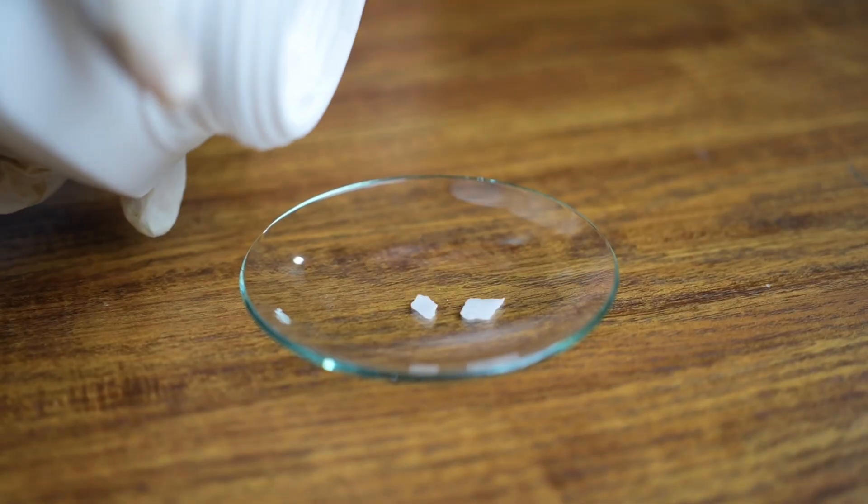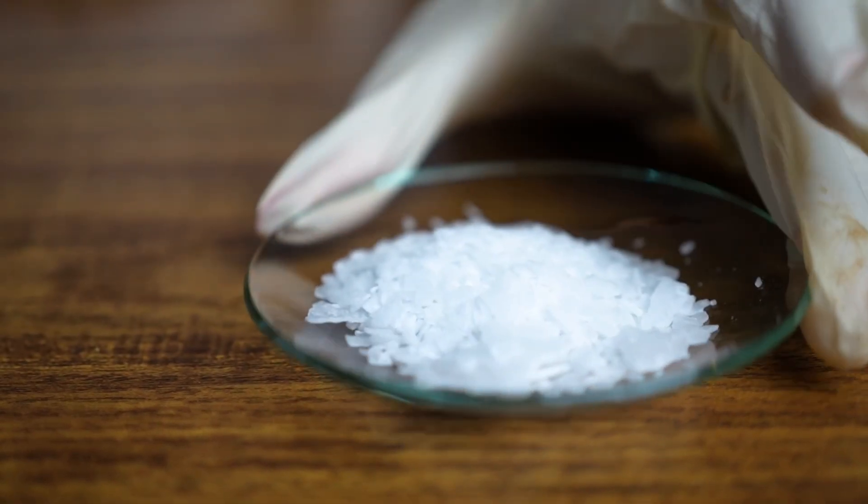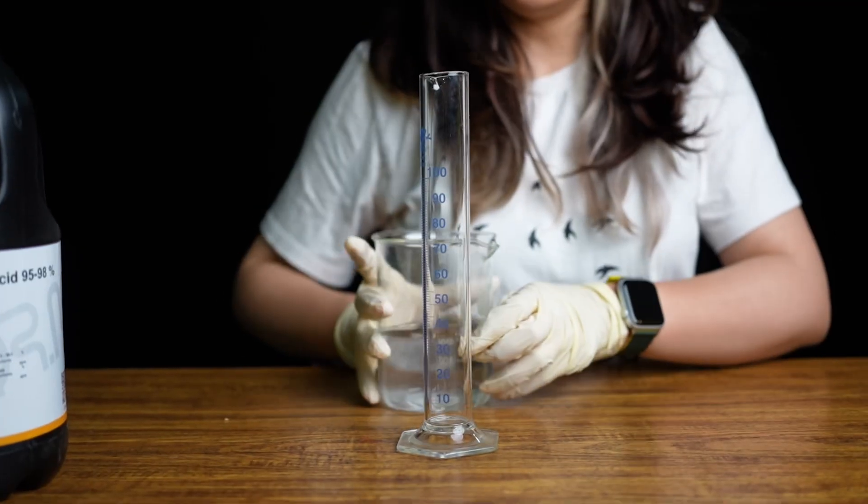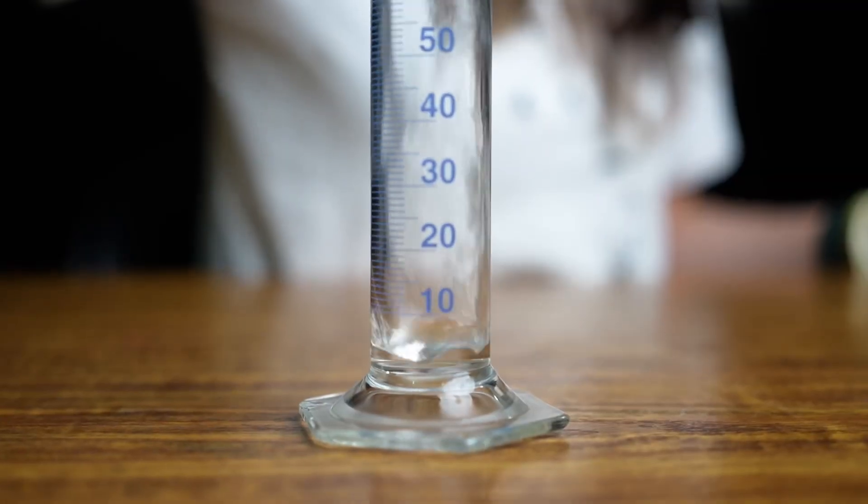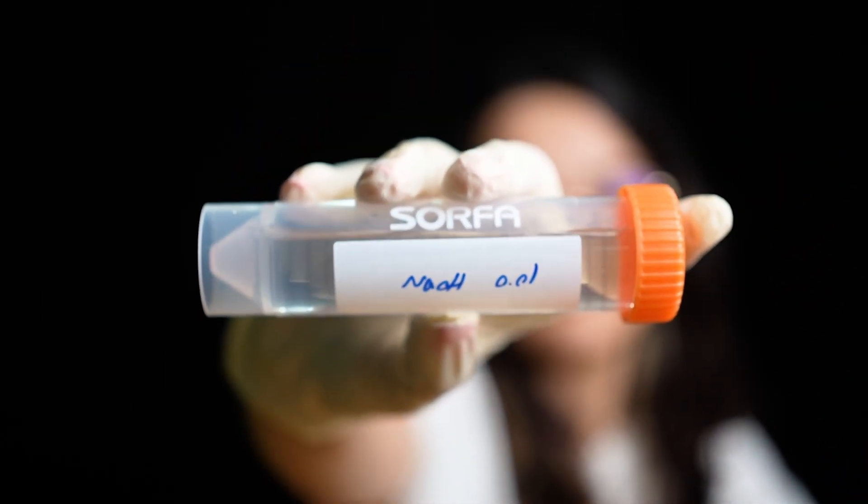I am using sulfuric acid and sodium hydroxide to perform a simple acid base titration. I used sulfuric acid with 98% purity and prepared sodium hydroxide with a concentration of 0.01 molar.